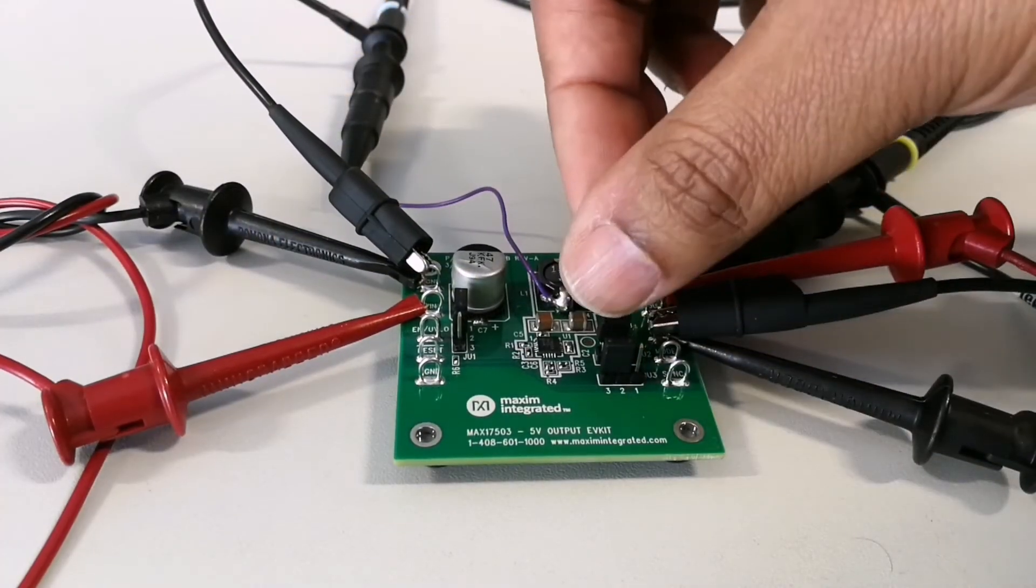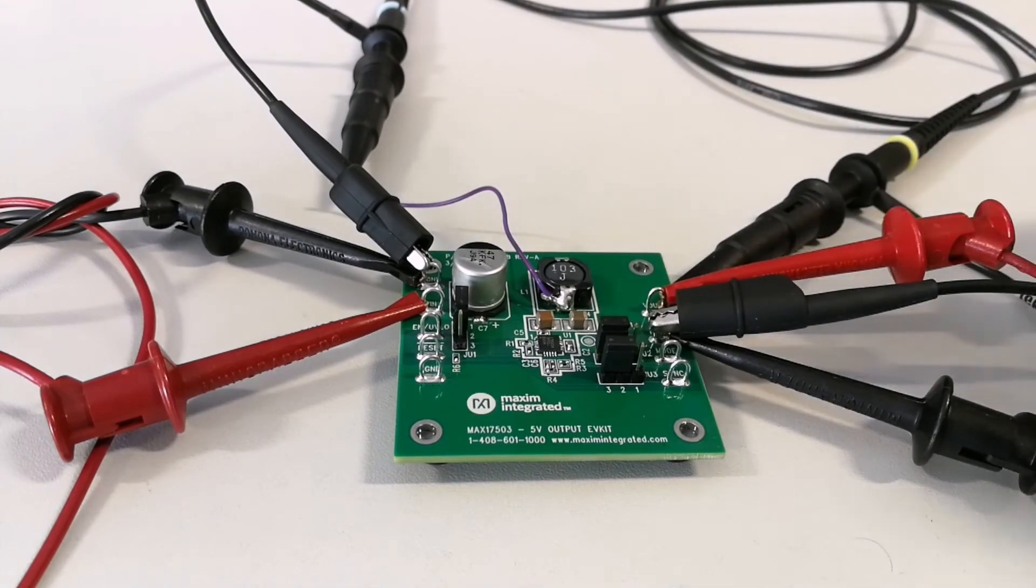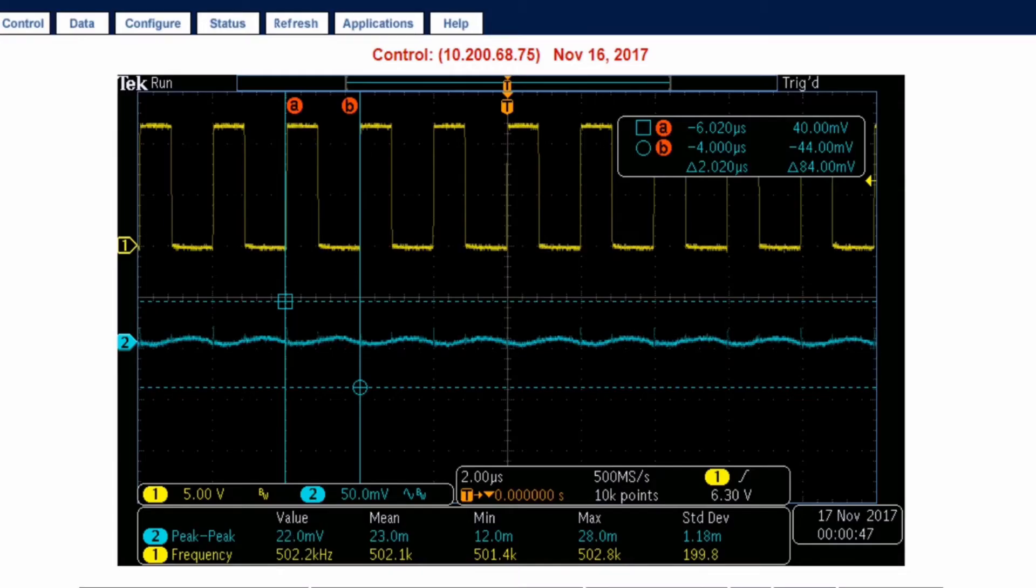Here is the MAX17503 EV kit running at 500 kilohertz. It is right now configured in PWM mode and running at 1 ampere of load.